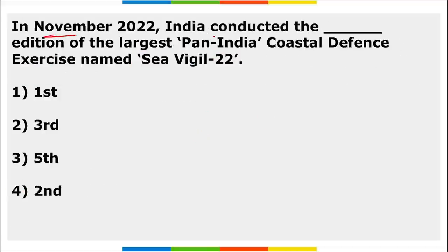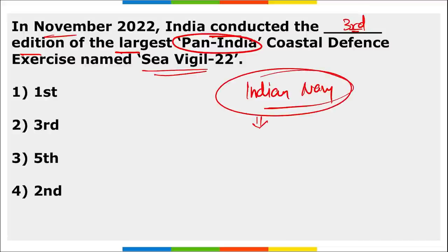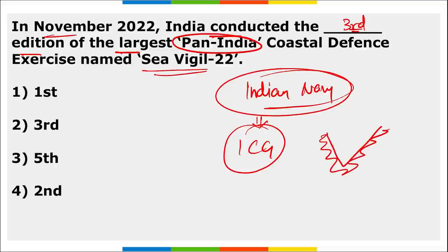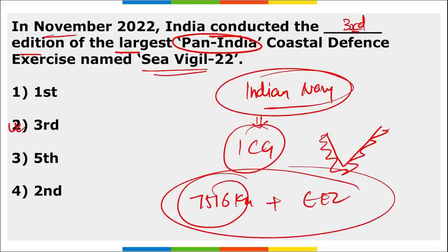In November 2022, India conducted the third edition of the largest pan-India coastal defense exercise — Sea Vigil 2022. This exercise was hosted by the Indian Navy along with the Indian Coast Guard to protect India's coastline. The exercise covered the 7,516-kilometer coastline along with the Exclusive Economic Zone.